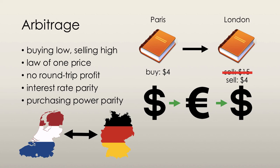Purchasing power parity states that there is an equal value of money — that goods are valued the same in all countries. But purchasing power parity theory does not always hold. Arbitrage occurs as investors purchase from countries where goods are valued less, and then sell that good in countries where it is valued more. We can see that on a daily basis.